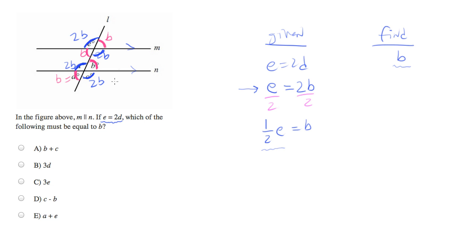We can start plugging these in. Everything's in terms of b. So answer choice A will be b plus c. Angle c is the lower right one, which we know is 2b, so that equals 3b. 3d, d is the lower left angle on the bottom, which is equal to b, so this will be 3b. These are both wrong. We're looking for something which equals b.